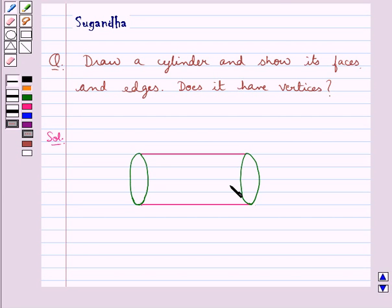Now let's see the faces and the edges of the cylinder. We know that flat surfaces of a solid are its faces. So let this be F1. This be F2.